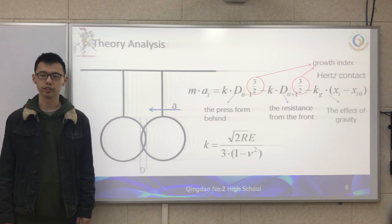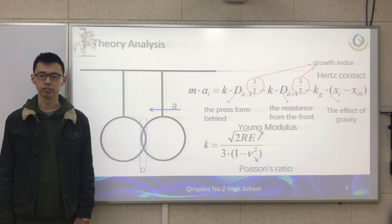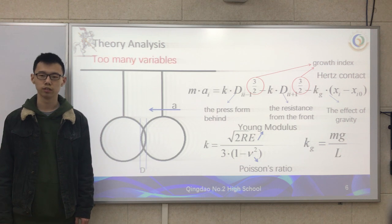K here is Z, A is Young's modulus, V is Poisson's ratio, and Kg is equal to mg over L.